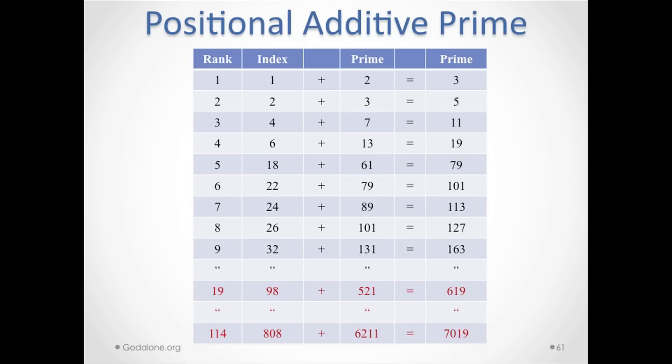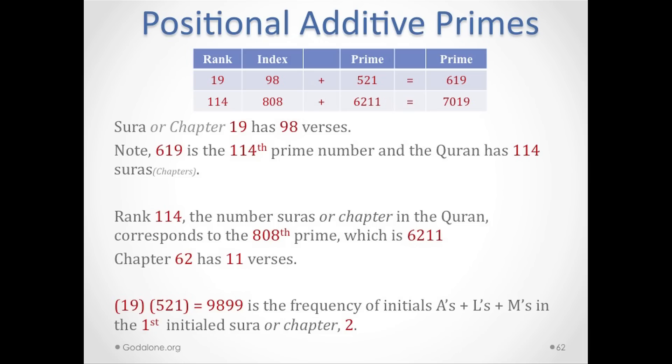Now, looking at positional additive primes, let's concentrate on 1998, 521, 619, and 114. Immediately you see chapter 19 has 98 verses. Note that 619 is the 114th prime number—the Quran has 114 surahs or chapters. Rank 114, the number of surahs or chapters in the Quran, corresponds to the 808th prime, which is 6211, and chapter 62 has 11 verses.